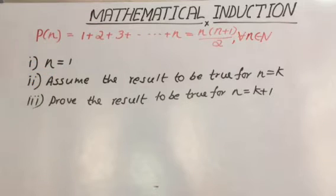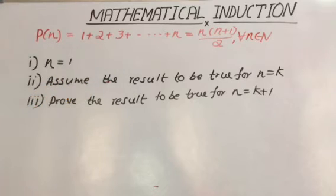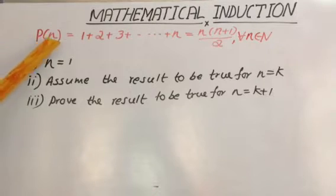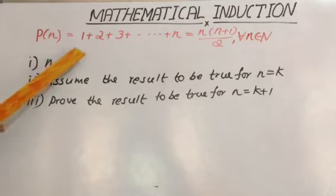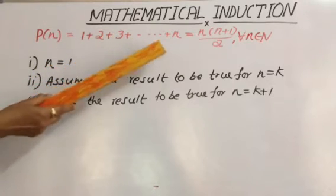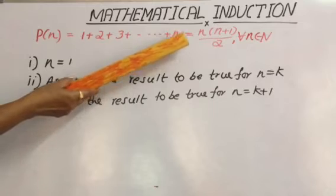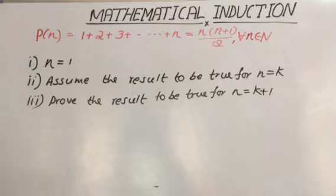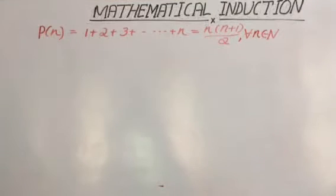To summarize, there are three steps under mathematical induction: First, put n equal to 1. Second, assume the result to be true for n equal to k. Third, prove the result to be true for n equal to k plus 1. Finally, get the conclusion. Now let us consider the solution to the problem: P of n equals 1 plus 2 plus 3 plus etc. plus n, equal to n(n+1) by 2, for all n belonging to the natural numbers.